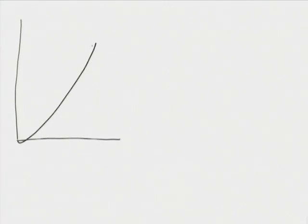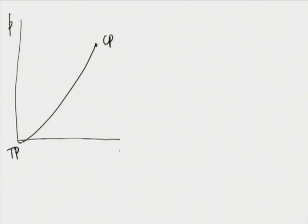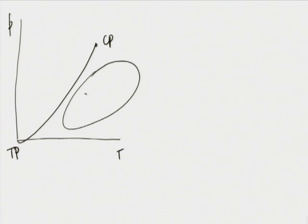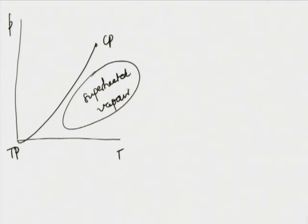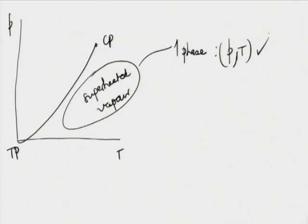That takes care of the saturation line and wet vapour. For superheated vapour, the state is a single phase, so P and T is an acceptable combination. The properties are tabulated in Table 3. If a system state is superheated vapour, it is single phase and P and T fully define the state.